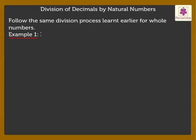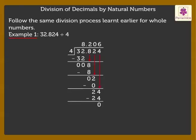Let us divide 32.824 by 4. Here, we place the decimal point in the quotient exactly above the decimal point in the dividend that is next to 8. Thus, we get the quotient as 8.206 and remainder as 0.